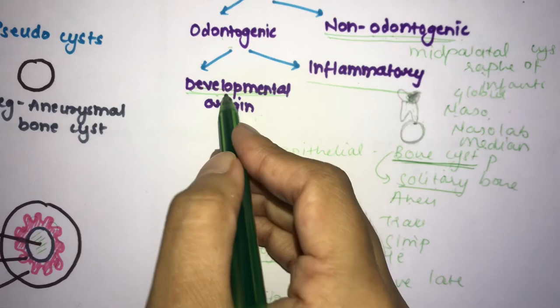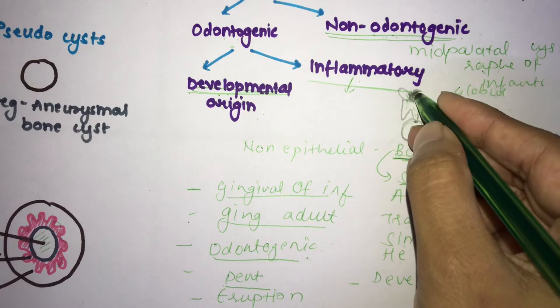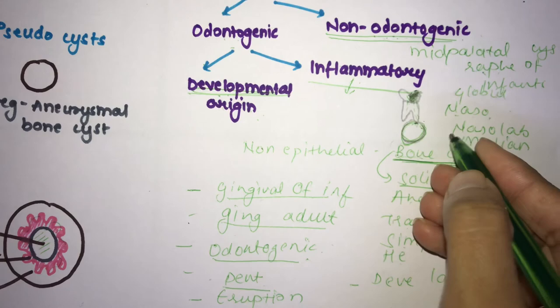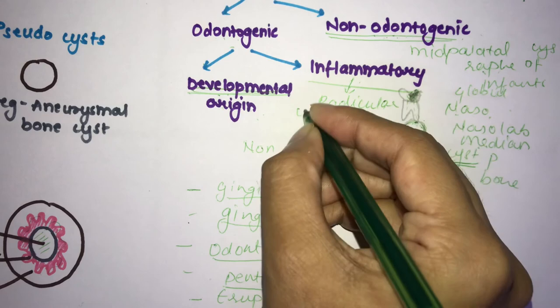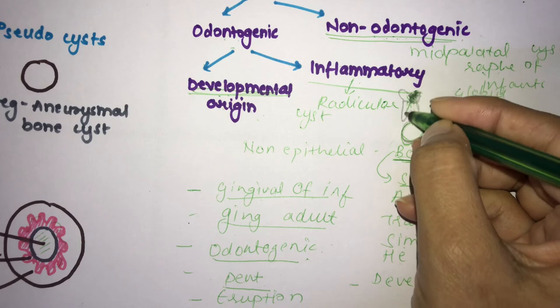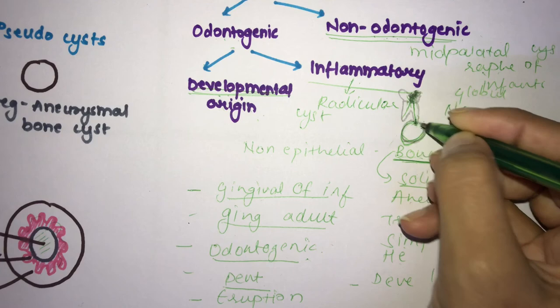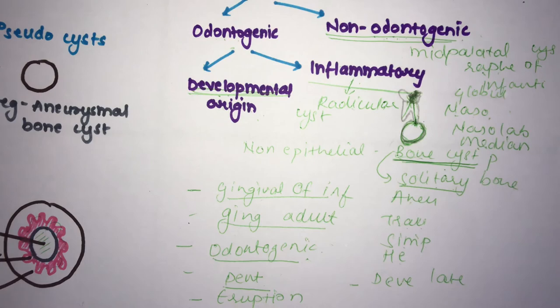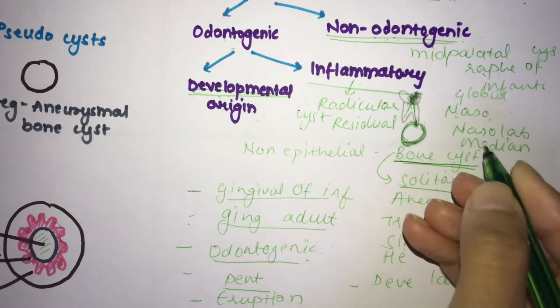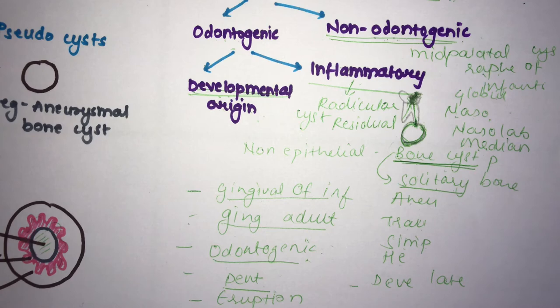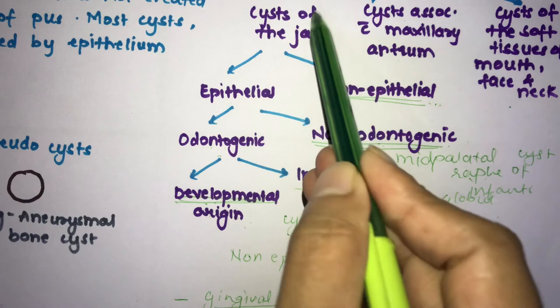For inflammatory odontogenic cysts, the most common is the radicular cyst, also called periapical cyst, which forms when untreated caries spreads through the pulp and apical foramen into the periapical area. Other inflammatory cysts are: residual cyst, inflammatory collateral cyst, and paradental cyst including juvenile paradental cyst — four examples in total.